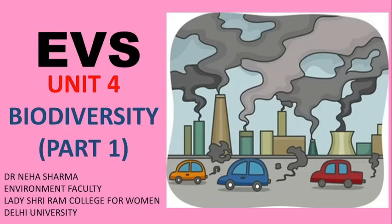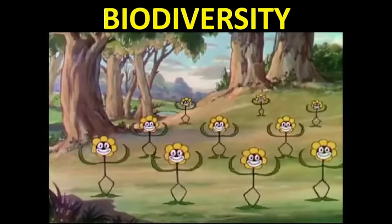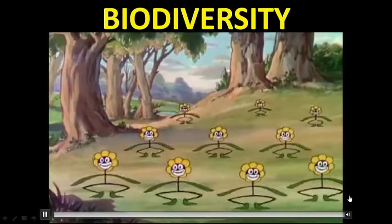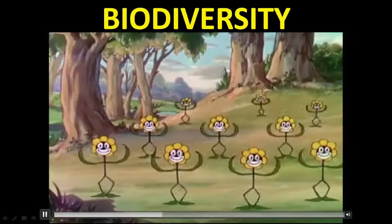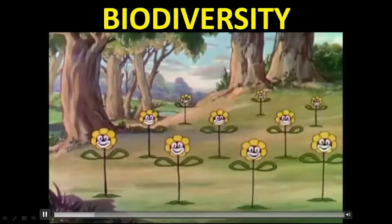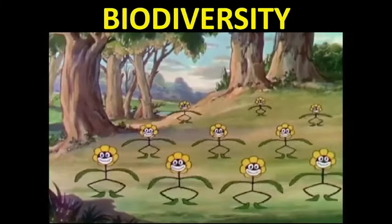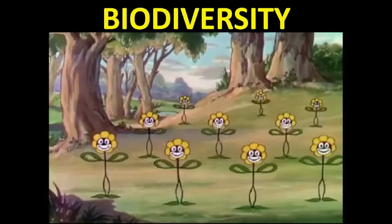Hello everyone, in this video we are going to learn biodiversity, which is chapter number four of the environment course. Biodiversity means variability of living organisms existing on our earth, so this variation and variability of life forms is actually biodiversity.